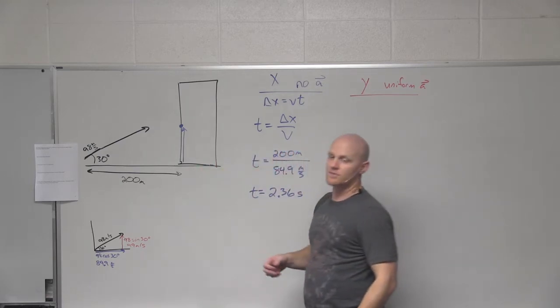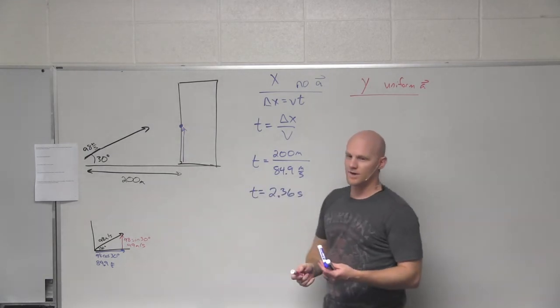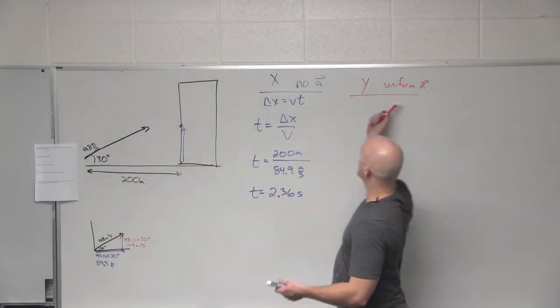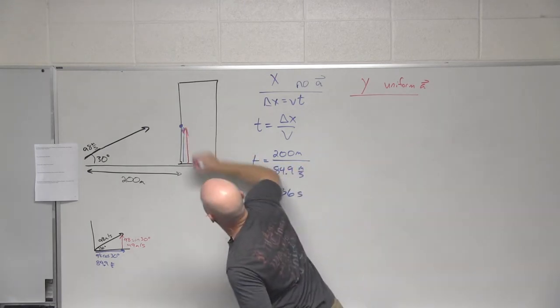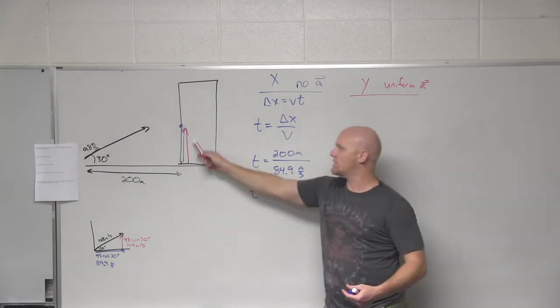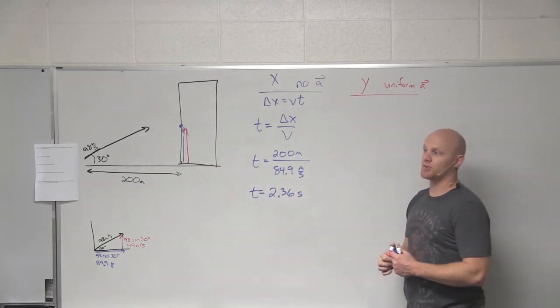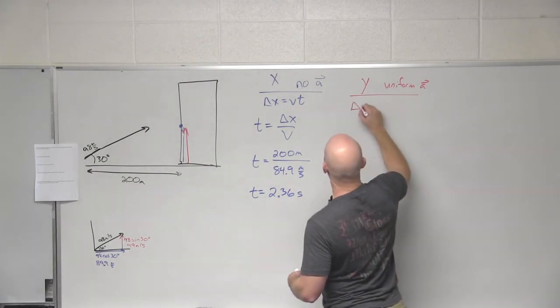Now that I know the time, now we can answer any question they throw at us, including how high up the building do we hit it? Maybe I should have made that in red to kind of go with my color scheme here, whatever. All right. So in this case, what are we actually trying to solve for? What variable? Delta y, displacement in the y direction.